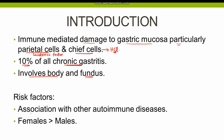Autoimmune gastritis exhibits a strong association with other autoimmune diseases such as Hashimoto's thyroiditis, type 1 diabetes mellitus, and rheumatoid arthritis. The disease more commonly affects females rather than males, like all autoimmune diseases. There is also a strong genetic predisposition, as the disease occurs in first-degree relatives more often than others.